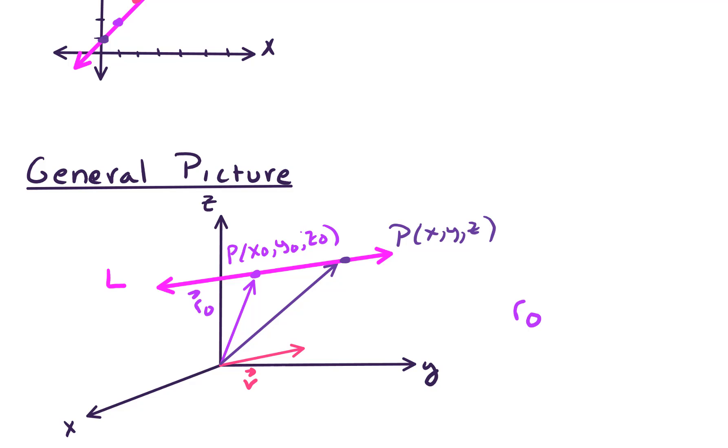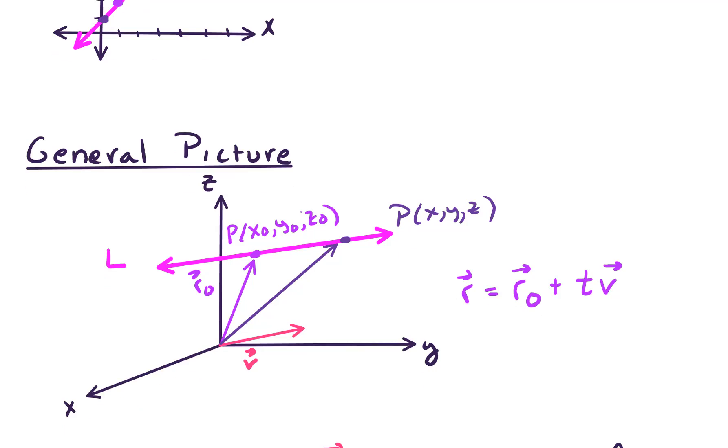And how do we get that? Well, we say it consists of the points, or vectors, R, given by R-naught plus some scalar multiple of vector V. And we've seen that in action for a particular example up above.